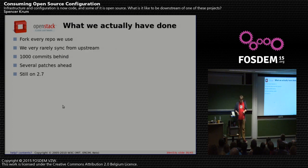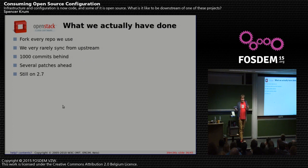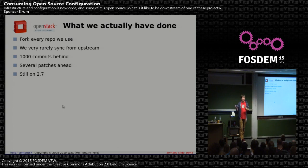That's a great way of describing something that actually went pretty terribly. We fork every repo we use because we need to control our environment, but we very rarely sync from upstream. We are a thousand commits behind — which isn't as bad as it sounds — but worse, we have several patches ahead with changes of our own, so we can't just pull anymore without merge conflicts. Even though OpenStack Infra upstream has moved to Puppet 3.7, we're still stuck on 2.7 because we can't move fast enough.